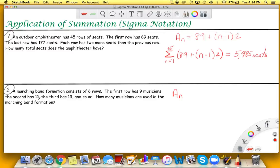So here the first row has nine musicians, my apologies. So nine plus n minus one, and the common difference is two. So we can use the summation of this one, and that summation would be...